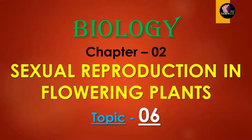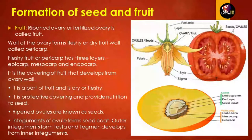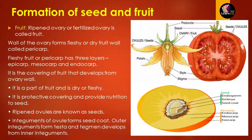Hello friends, welcome to one more new video of Learn It. Today we'll be taking topic 6 of chapter 2, which is sexual reproduction in flowering plants. Before moving forward, let us take a small recap of the previous video. We started from the embryogeny and studied about dicot and monocot embryogeny and the development of the embryo. Now let us move to a new segment: the formation of seeds and fruit.